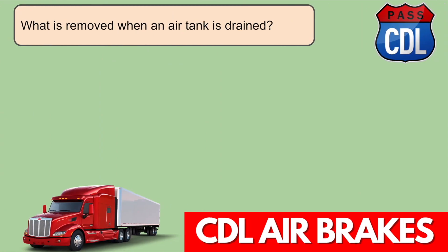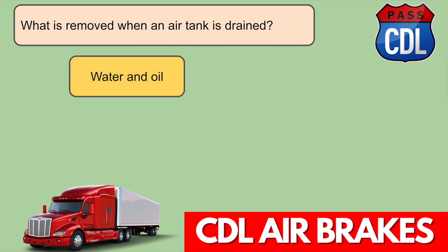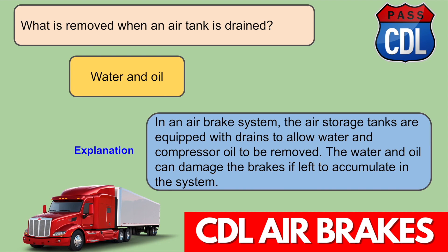What is removed when an air tank is drained? Water and oil. In an air brake system, the air storage tanks are equipped with drains that allow water and compressor oil to be removed. The water and oil can damage the brakes if left to accumulate in the system.